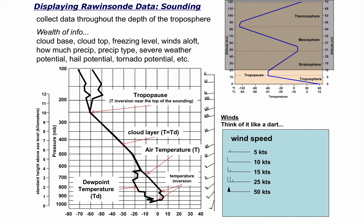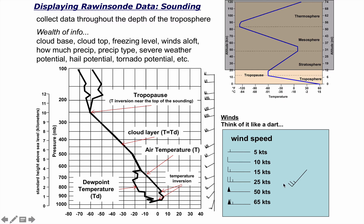When we get up to 50 knots, we don't keep adding long ticks — wind speeds can get over 200 miles an hour in hurricanes or the jet stream. So every time we have five long ticks, we replace them with a triangle worth 50 knots. For example, a triangle plus a long tick plus a half tick is 65 knots. A knot is a nautical mile per hour — roughly 1.15 miles per hour. For this class, you can treat a knot as approximately equal to a mile per hour.